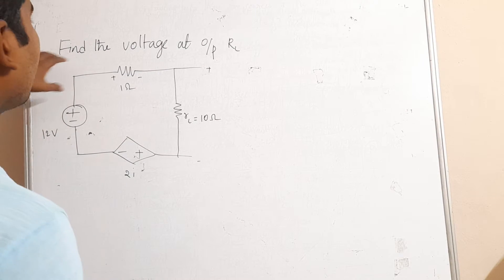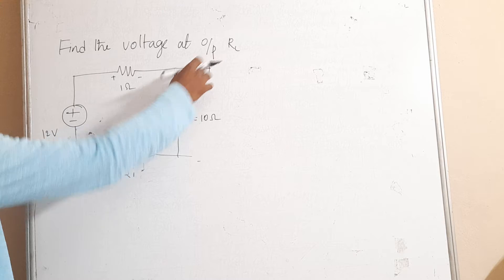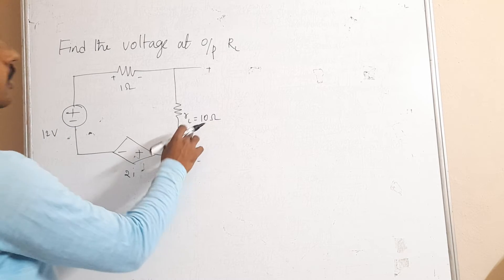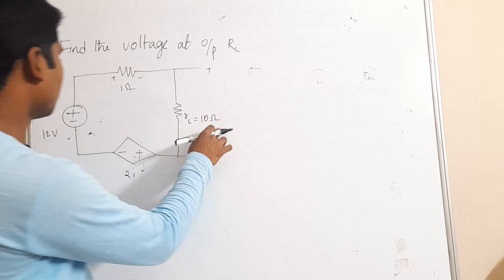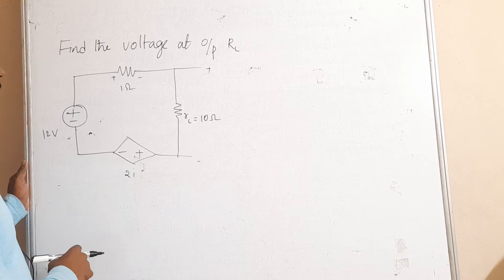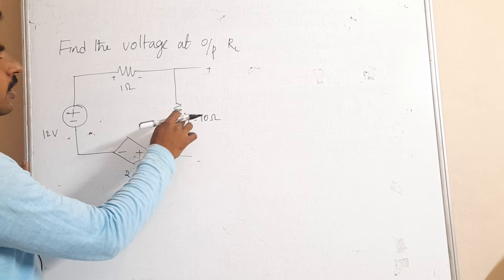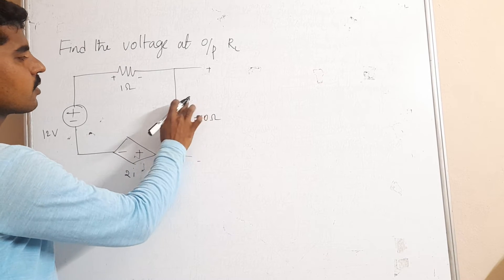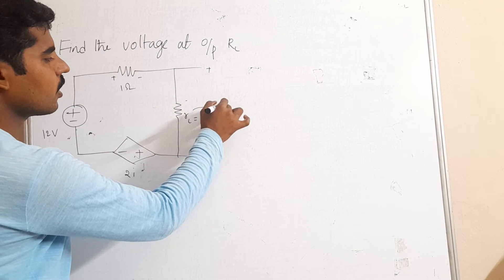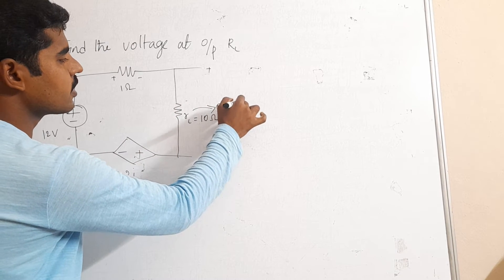Okay, next problem is find the voltage at output RL, that is nothing but output resistance value. This is the circuit diagram where they are given find the voltage across this RL resistance. What is the output voltage here?